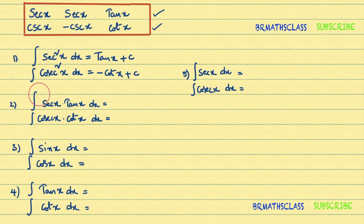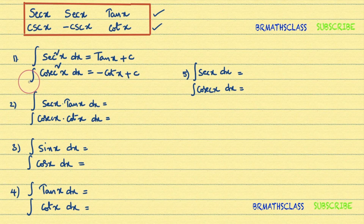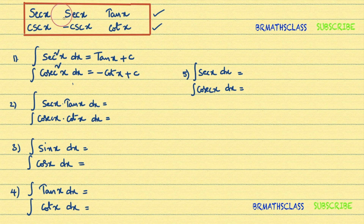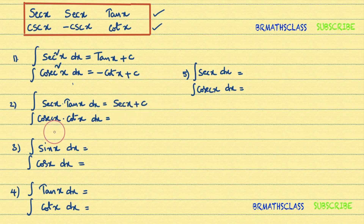Now come to the third formula. We are learning integrals of 10 trigonometric formulas and you already learned two. Now: integral of secant x times tan x dx. Observe the first row: secant x, tan x, secant x, tan x — what is remaining? Remaining is secant x. So integral of secant x times tan x dx is secant x plus C.